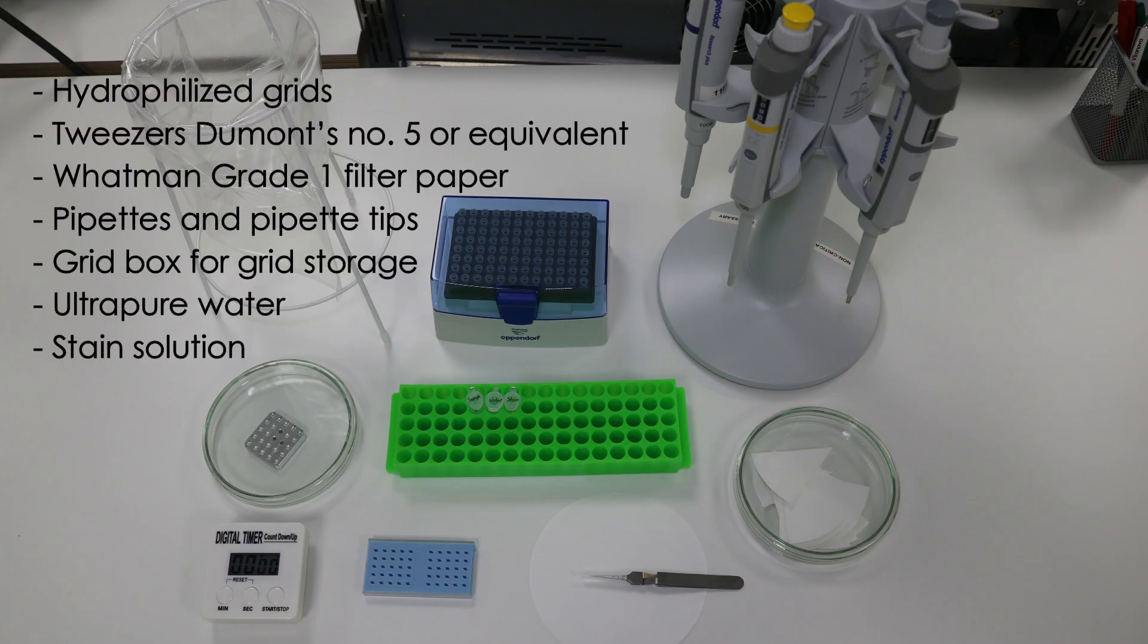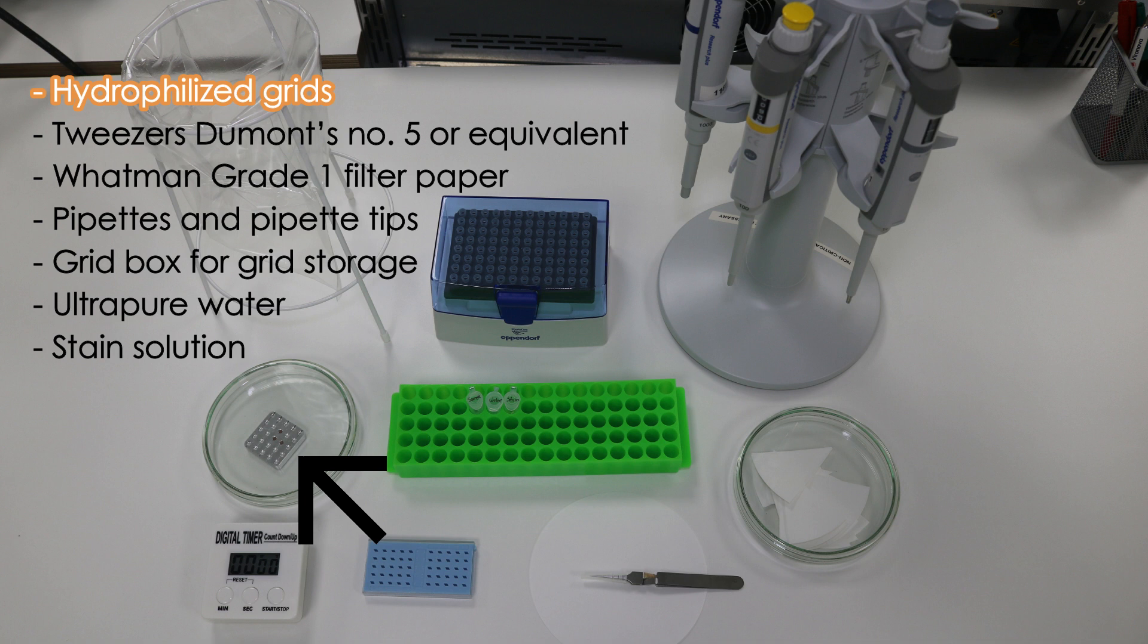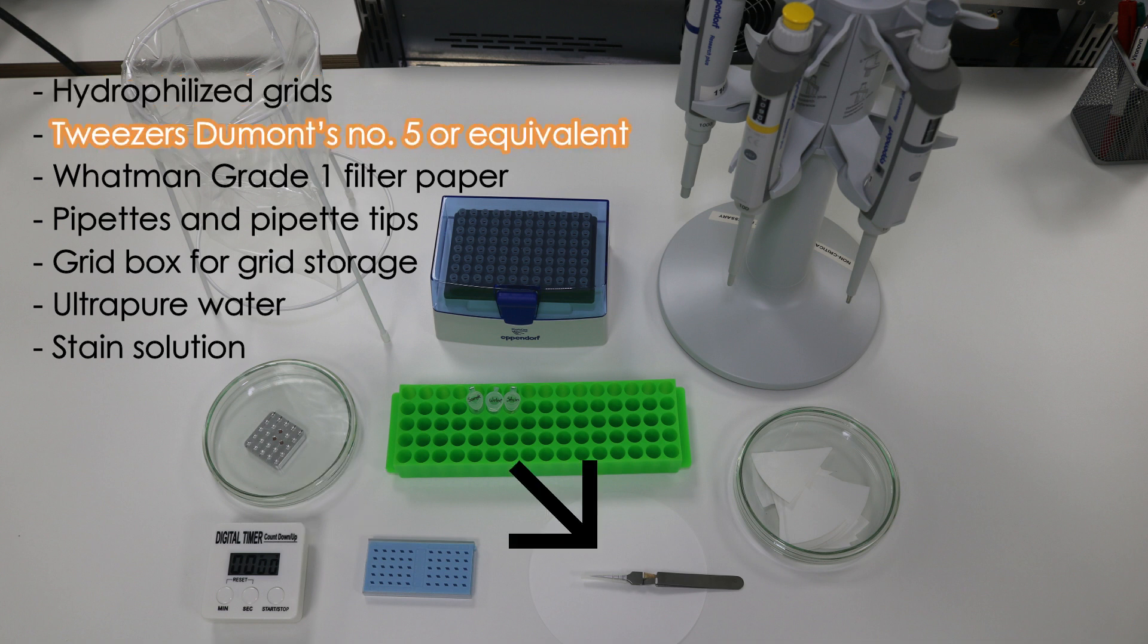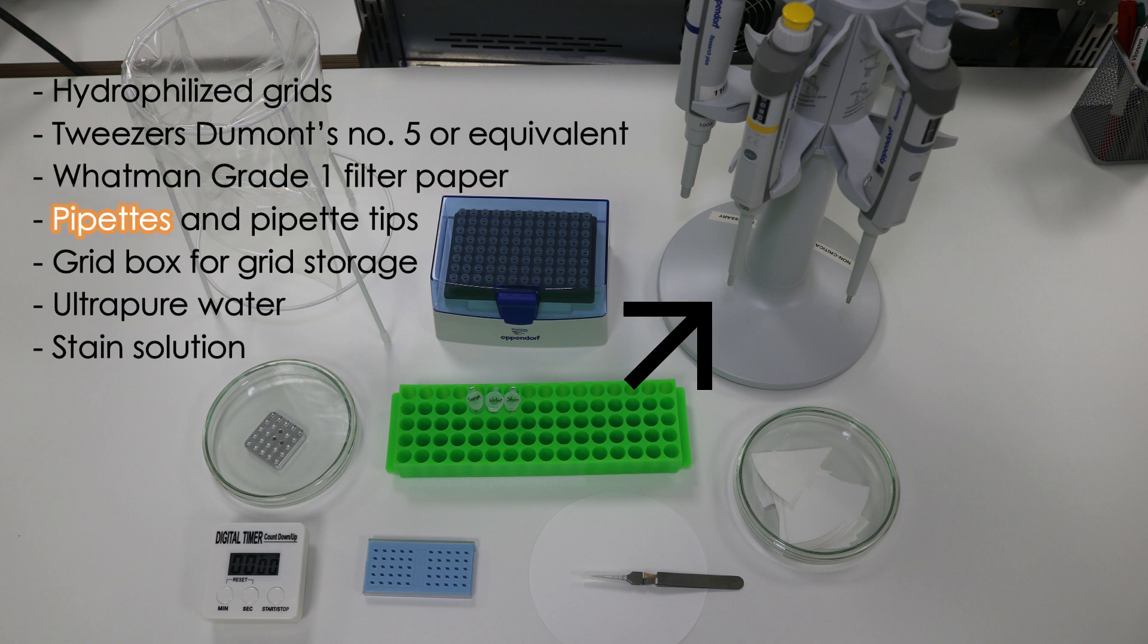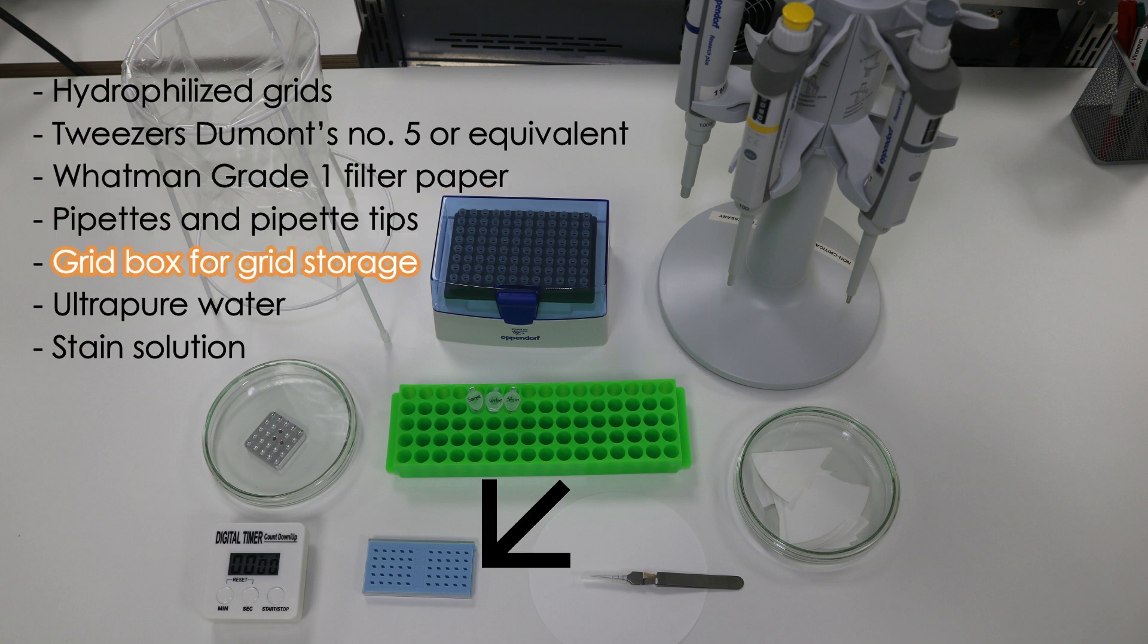Before you begin, gather the materials you need which are pictured and listed. If your grid is not hydrophilized, see the video on sample preparation grid glow discharge.